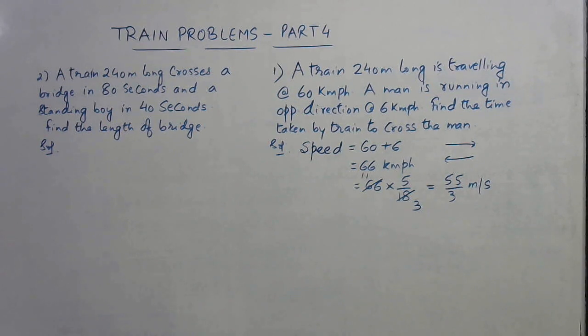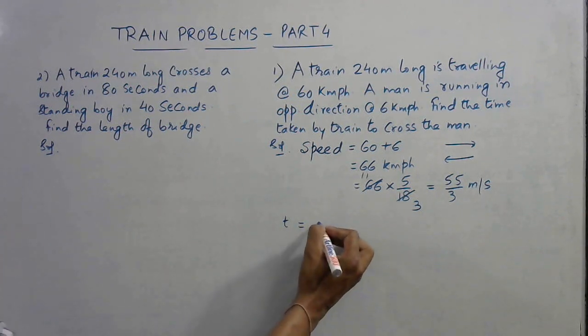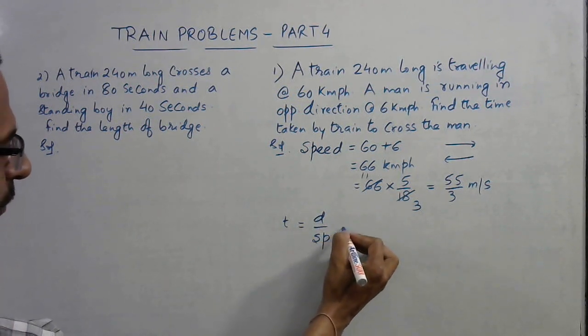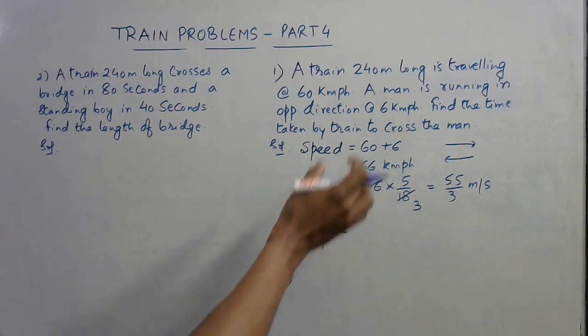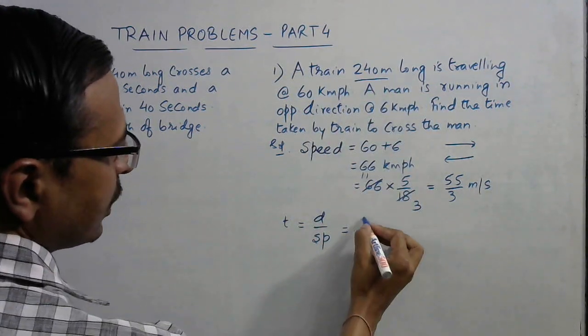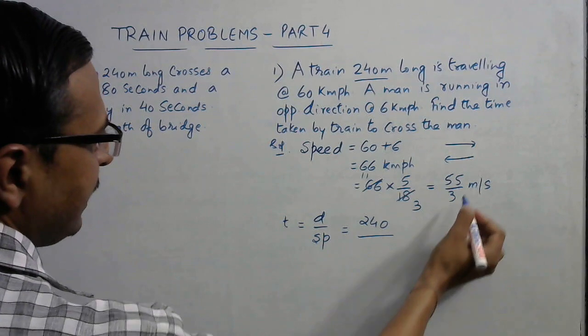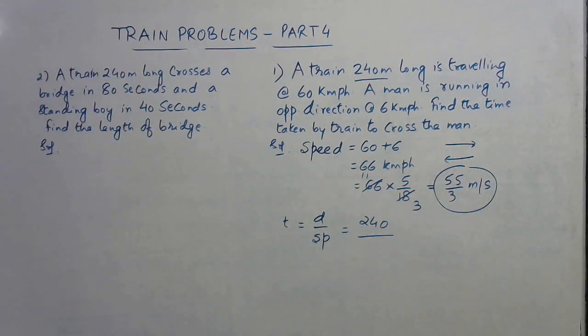Now for finding the time taken to cross the man, we need to use the formula distance upon speed. So the distance is the length of the train, which is 240, and speed is to be taken as the relative speed of the train with respect to the man, that is 55 by 3 meters per second.